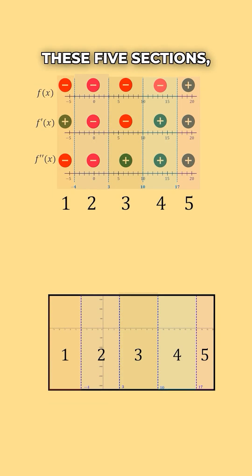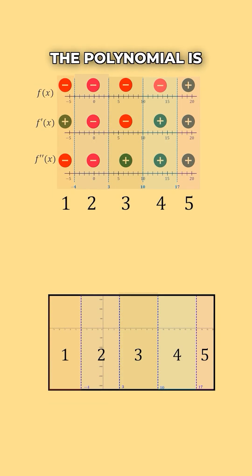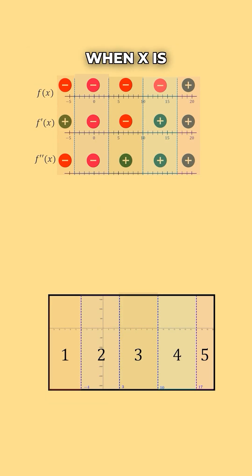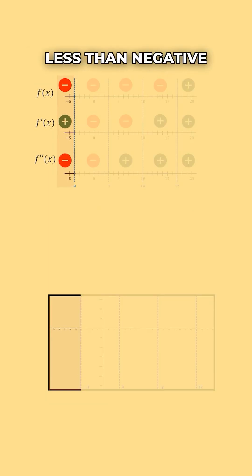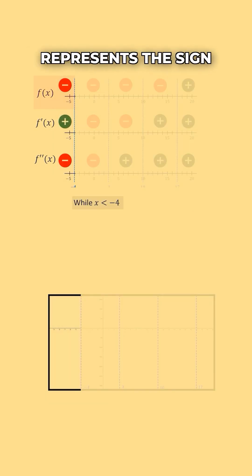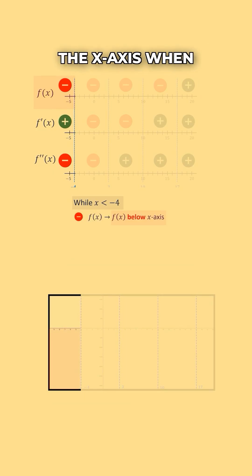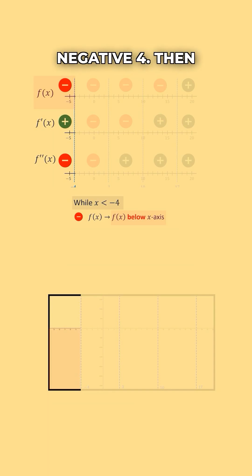In each of these 5 sections, we can use the signs to tell us what the polynomial is doing in each section. Our top level, which represents the sign chart for our polynomial, is negative, which tells us that our function will be below the x-axis when x is below negative 4.